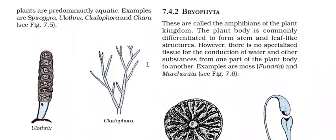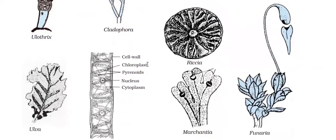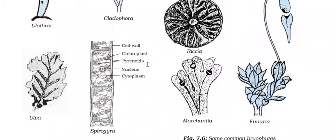The next group is Bryophyta. These are called the amphibians of the plant kingdom. The plant body is differentiated to form a stem and leaf-like structure, but there is no special tissue for the conduction of water and food — it lacks conducting tissue. Examples include moss, funeria, marchantia, and riccia.